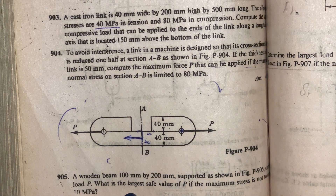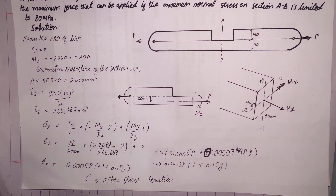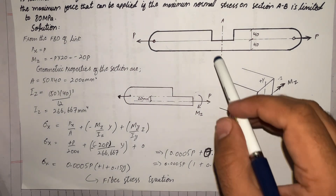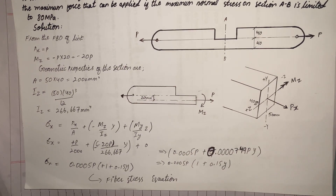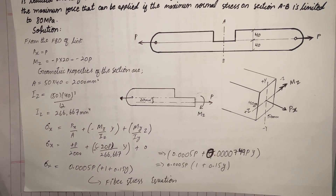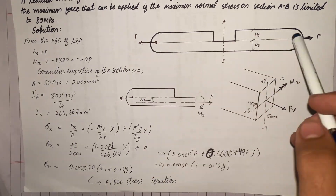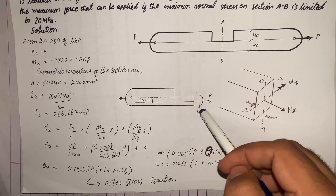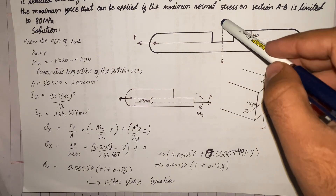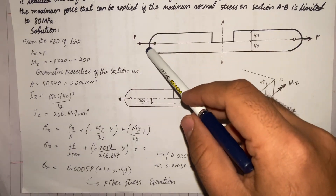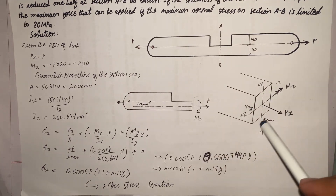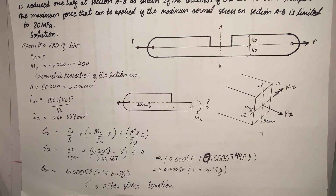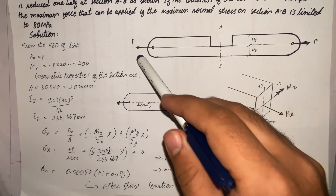So let's start the solution. First, we have to draw the free body diagram of the whole link and then calculate the geometric properties. The forces are applied at the ends of this link, and when we apply a cut at section AB, I have drawn the left portion of the link here in three dimensions. Tensile forces are applied at the end.